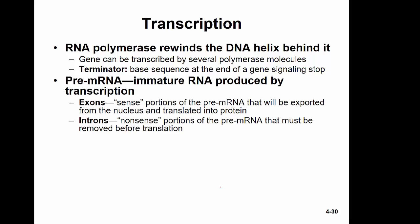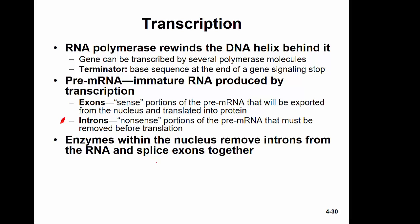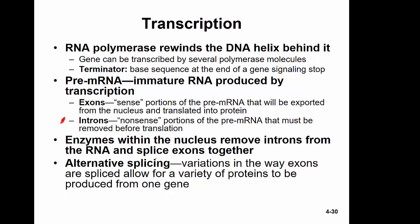In the nucleus, we initially get a pre-mRNA that is not yet ready to go to the cytoplasm. It's made of segments called exons and introns. Exons are the sense portions that will be sent out of the nucleus to build a protein. Introns are nonsense portions that are removed before translation. Enzymes in the nucleus remove the introns and join the remaining pieces together. Variations in how exons are spliced and introns are removed — called alternative splicing — allow a variety of proteins to be produced from one gene.